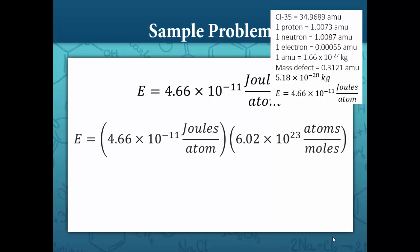The binding energy for a mole of chlorine-35 atoms is 4.66 times 10 to the negative 11 joules times the number of atoms in a mole, which is 6.02 times 10 to the 23. Therefore, the binding energy of a mole of chlorine-35 atoms is equal to 2.81 times 10 to the 13 joules.